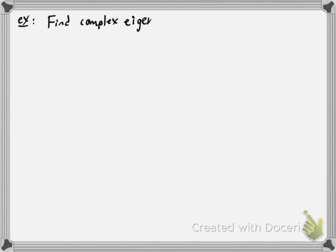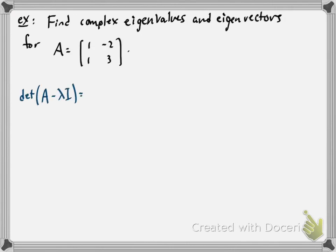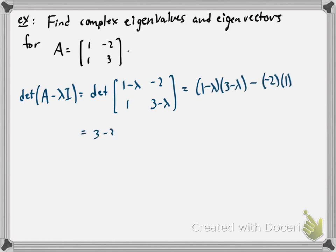So for example, let's go through this example in all of its details. Let's first find the complex eigenvalues and eigenvectors of this 2×2 matrix A given by [1 -2; 1 3].